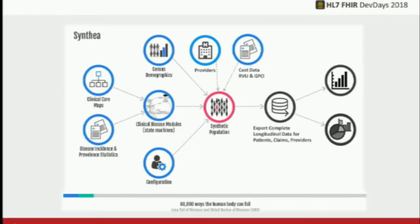Then we take cost data — relative value units and geographic price cost index — so we can simulate the cost of things. When we generate claims, there are costs associated with every encounter and every procedure. In the real world costs vary super widely, so they're not necessarily accurate, but CMS Medicare reimbursement rates serve as the baseline. Then what happens is you generate this synthetic population. You have these state machines and you crank it on a time step basis, simulating people from the day they're born until they die or up to the present day.